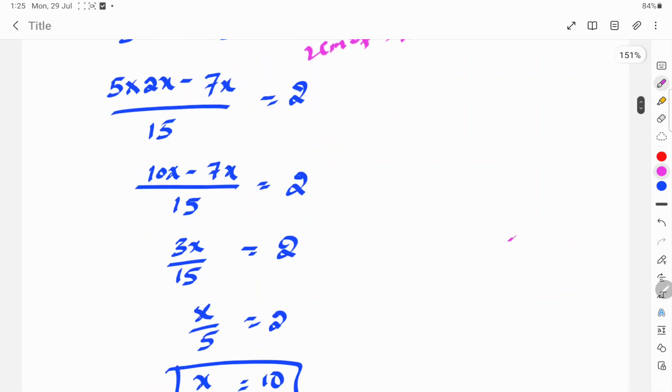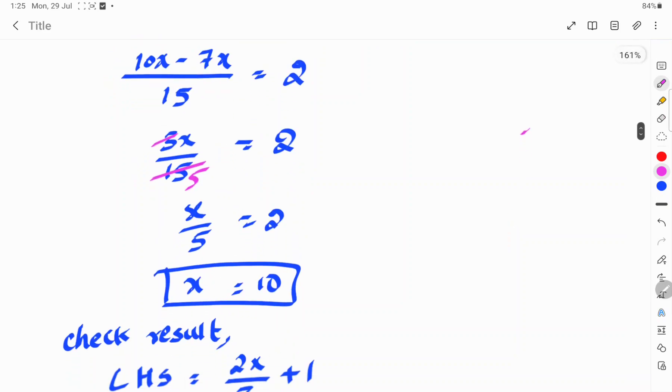So, 10x minus 7x is 3x by 15, equal to 2. Here, 3 cancels in 15 five times. So, x by 5 is equal to 2. x equals 2 times 5 is 10. So, x is equal to 10.